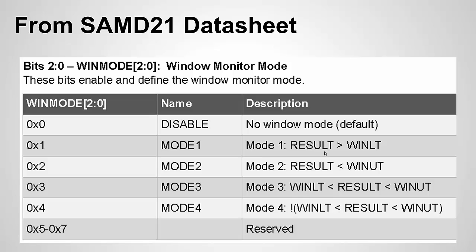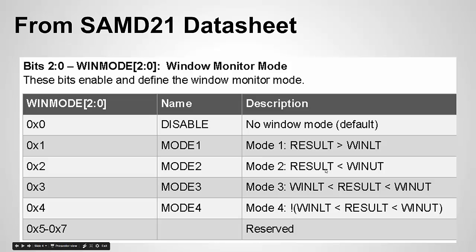Here's a cutout straight from the SAMD21 datasheet showing how to set up window mode and the different types. You can do disabled (the default), or modes 1 through 4. You have two registers: the window lower tolerance and the window upper tolerance. In mode 1, if the ADC result is above the lower tolerance it triggers the interrupt. Mode 2 triggers if it's below the upper tolerance. Modes 3 and 4 trigger if the result is inside or outside the window respectively. The datasheet shows bits 2 to 0 and the corresponding hex values 1, 2, 3, 4 for setting the window mode register.